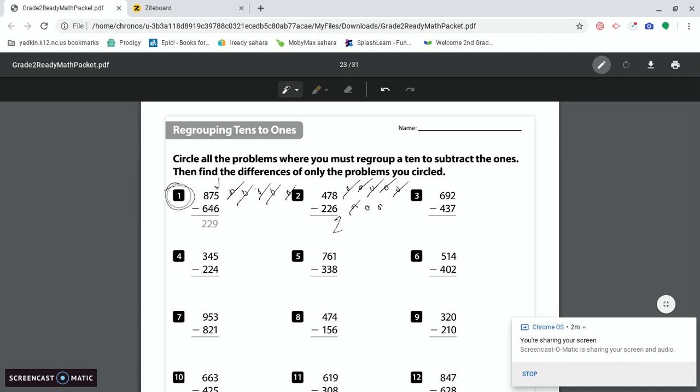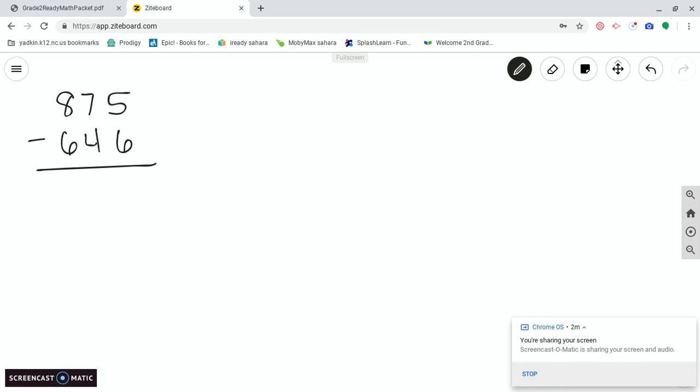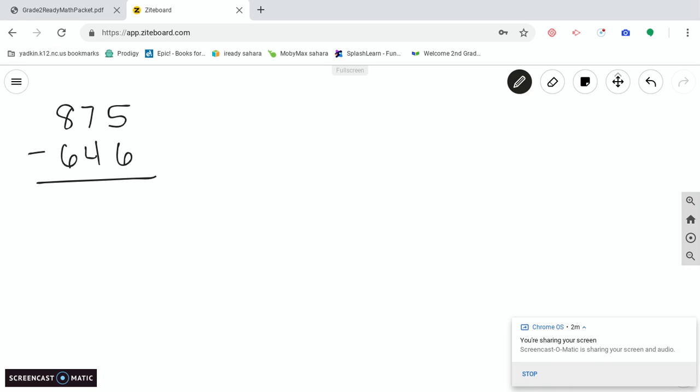Now let's talk about some strategies to solve those problems. We're going to solve number one: 875 minus 646. The first way, I know many of you like doing the quick drawings, drawing those base ten blocks. So I'm going to draw it out first. However, I'm going to use chips, which means I have to label my chart.